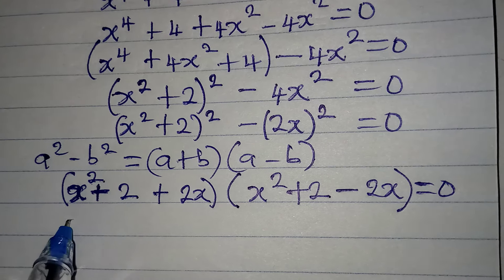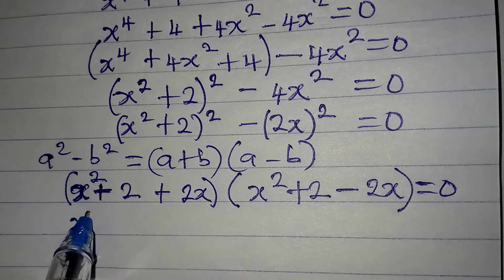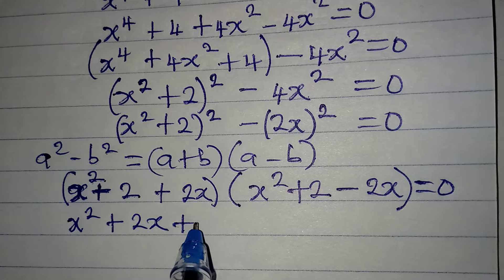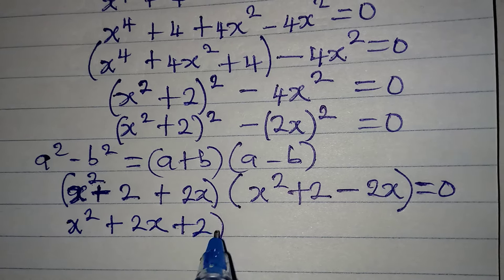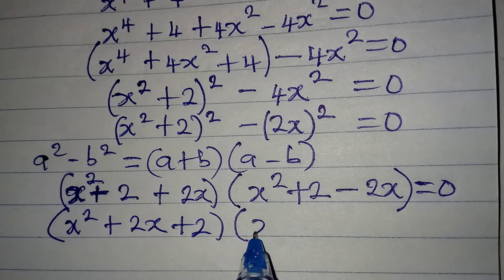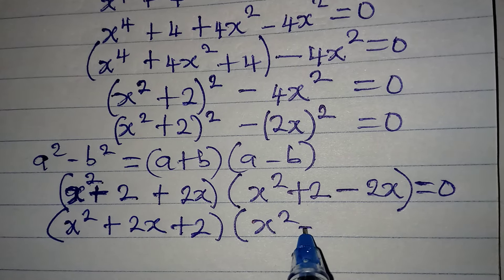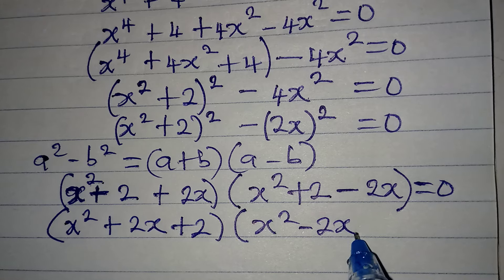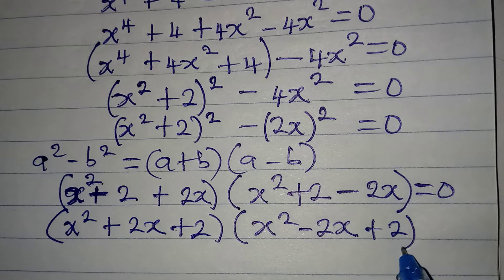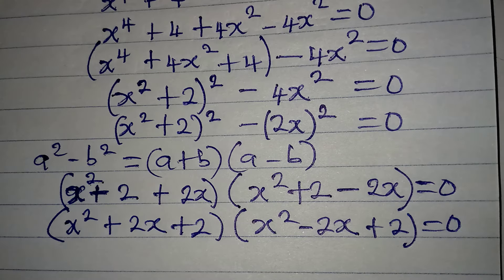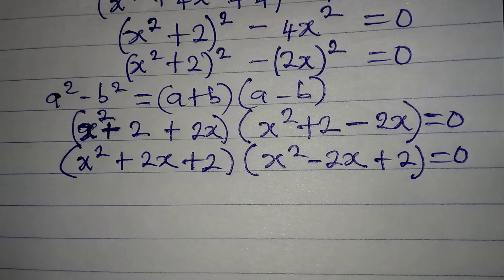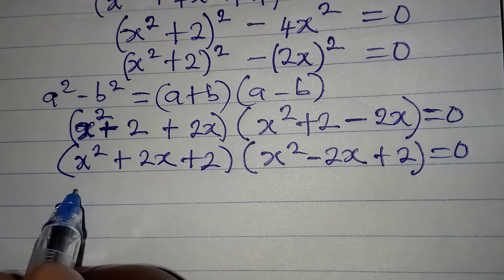Let us continue. I can rearrange this so I have x squared plus 2x plus 2 in the first bracket, and in the second bracket I have x squared minus 2x plus 2, equal to zero. Now we are going to apply the zero product rule.